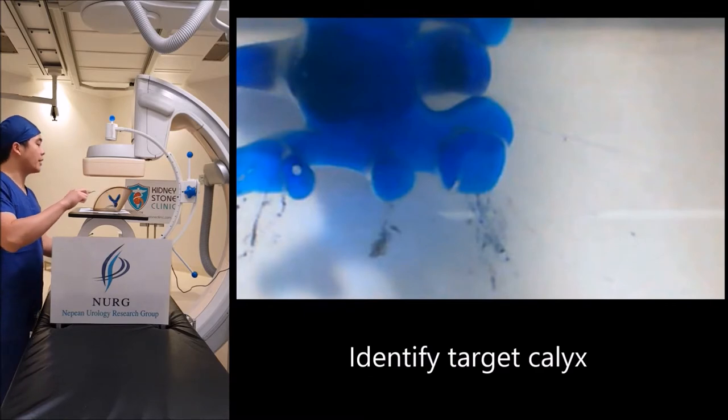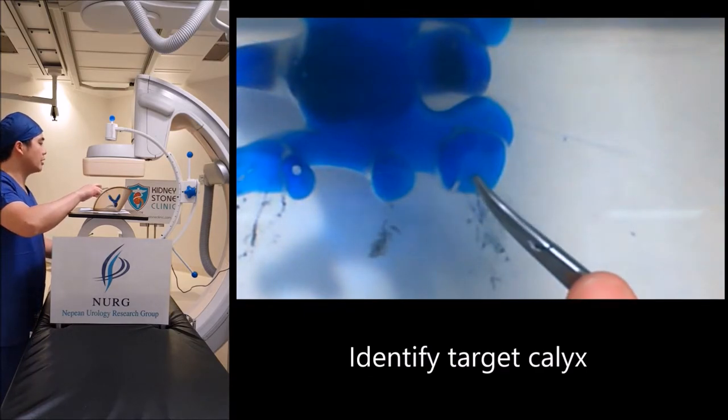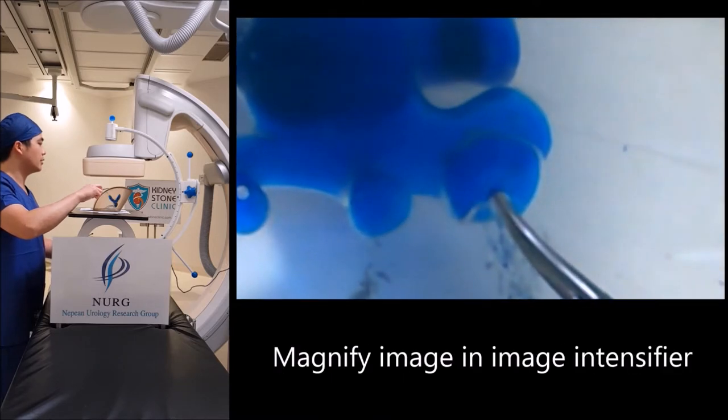Using the image intensifier, identify the target calyx. Center the image intensifier over the target calyx and magnify the image.